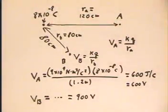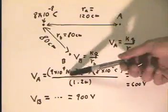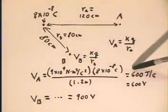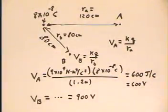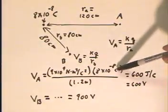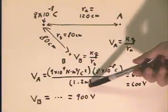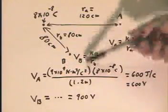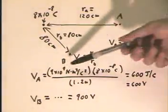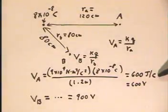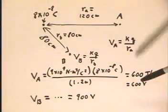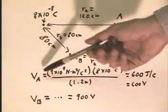Substituting for KQ and RA, we get the voltage which comes out to be 600 joules per coulomb. The units are fairly simple here: the coulomb cancels one of the coulombs, the meter cancels one of the meters, so we have Newton meters over coulombs. A Newton meter is a joule, so we have joules over coulombs, and a joule per coulomb is a volt.